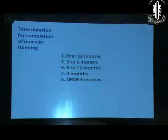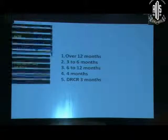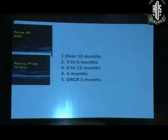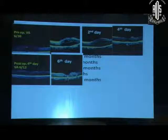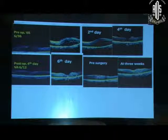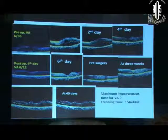Literature says that time duration for complete macular thinning following vitrectomy can extend up to 12 months, and in DRCR it was 3 months. These are cases under our personal follow-up. This is the picture on the 4th post-operative day, 2nd day, 4th day, 6th day; this is the picture before surgery, at 3 weeks, and at 40 days.